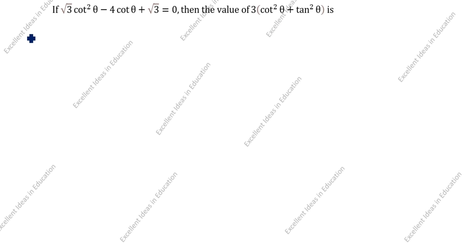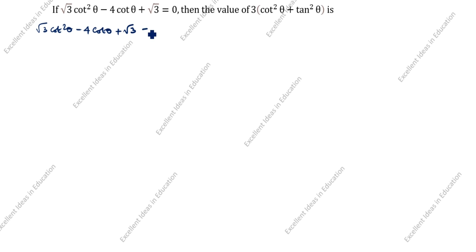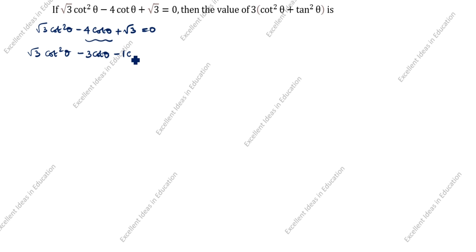Now we will solve this problem. What is given in this question? Root 3 cot squared theta minus 4 cot theta plus root 3 is equal to 0. How we will split this one? Root 3 cot squared theta minus 3 cot theta minus 1 cot theta plus root 3 is equal to 0.